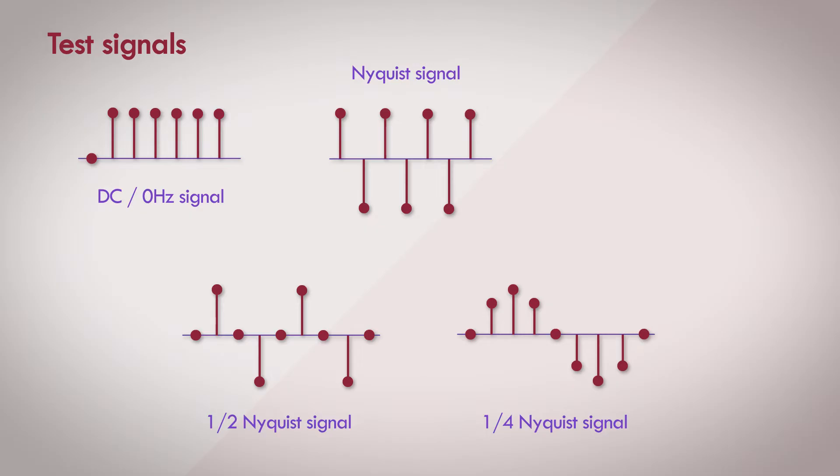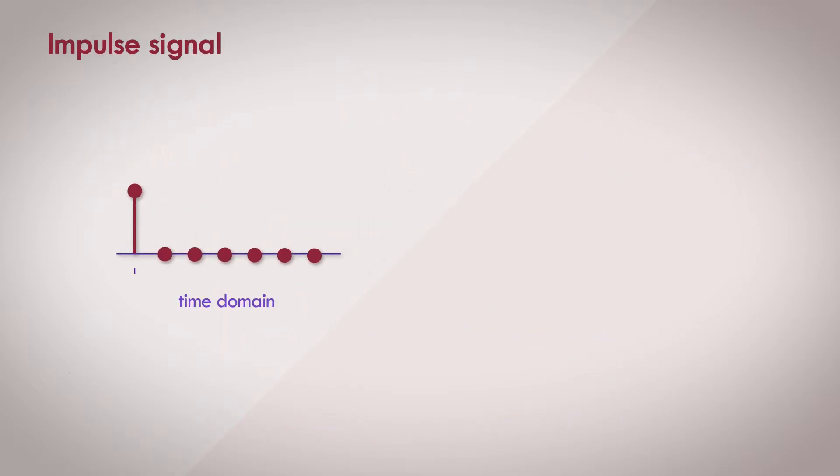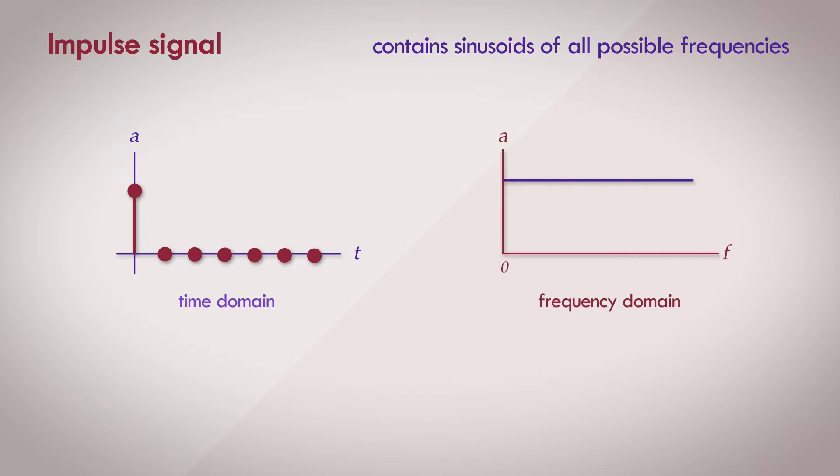The last test signal left for us is the impulse signal. We learned from the last video that the impulse signal has a very unique property - that it contains sinusoids of all possible frequencies, from 0Hz all the way up to the Nyquist frequency. Now that we have a better understanding of what an impulse signal is, let's pass it through the filter and get an impulse response.